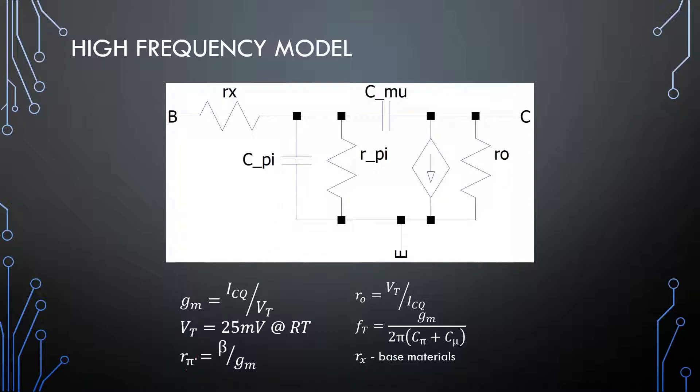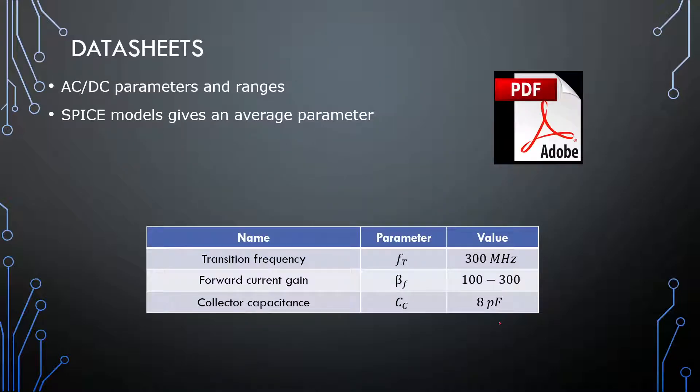The transconductance, rπ and rout shouldn't be that new, but the new ones is rx, cπ and cμ. The transition frequency is basically the gain bandwidth product of the transistor, and we have an equation for gm over 2π cπ plus cμ. The combination of these two will give our transition frequency. But, we are sitting with a bit of an issue.